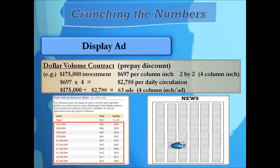The dollar volume contract shows different investment tiers — the more money you invest, the steeper the discount. Investing in the first tier at $175,000 gives a rate of $697 per column inch. Running a two-by-two four column inch ad costs $2,788 per insertion, so with the money invested you can run your ad 63 times.